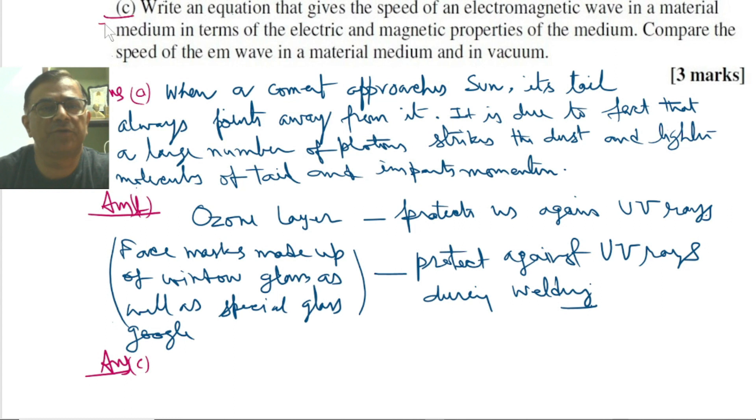In part C of the problem, we are supposed to write an equation of the speed of electromagnetic wave in a material medium and that should be in terms of electric and magnetic properties of the material. We know that the velocity of light as it travels through the medium is given by the expression V equals C by mu.